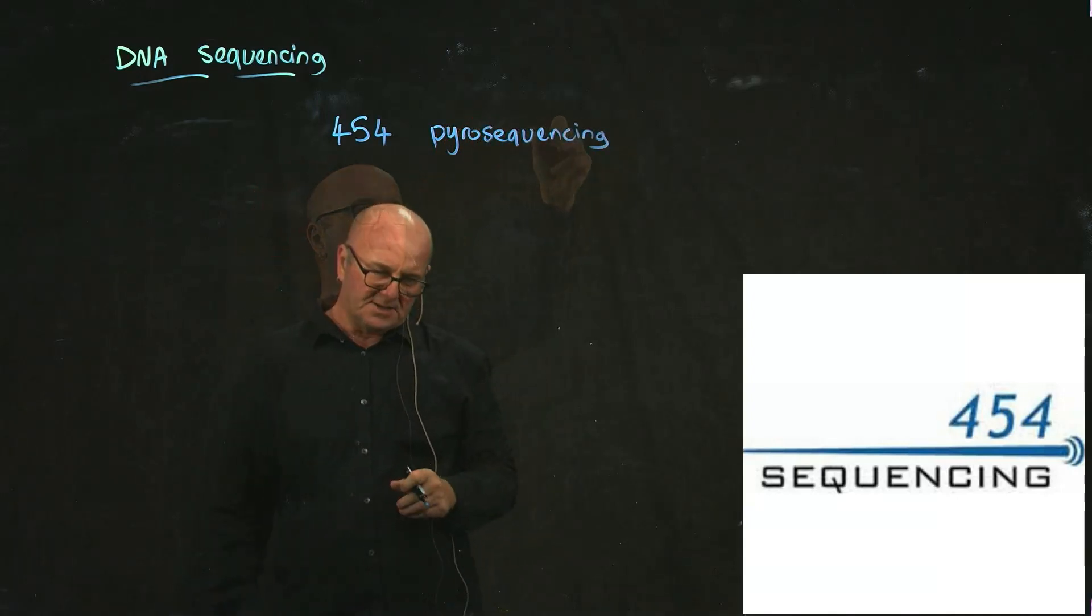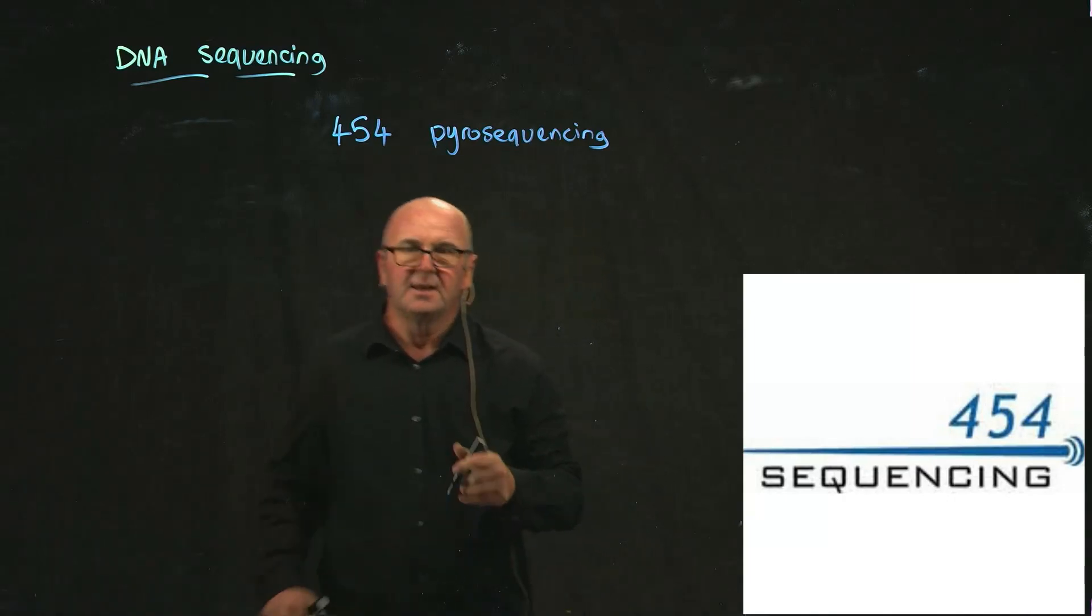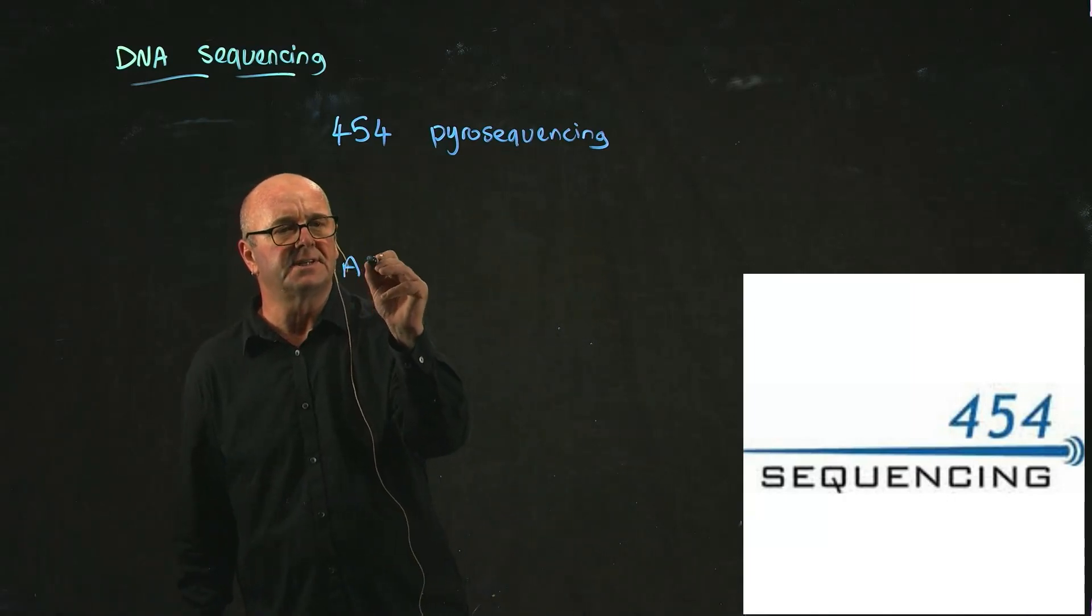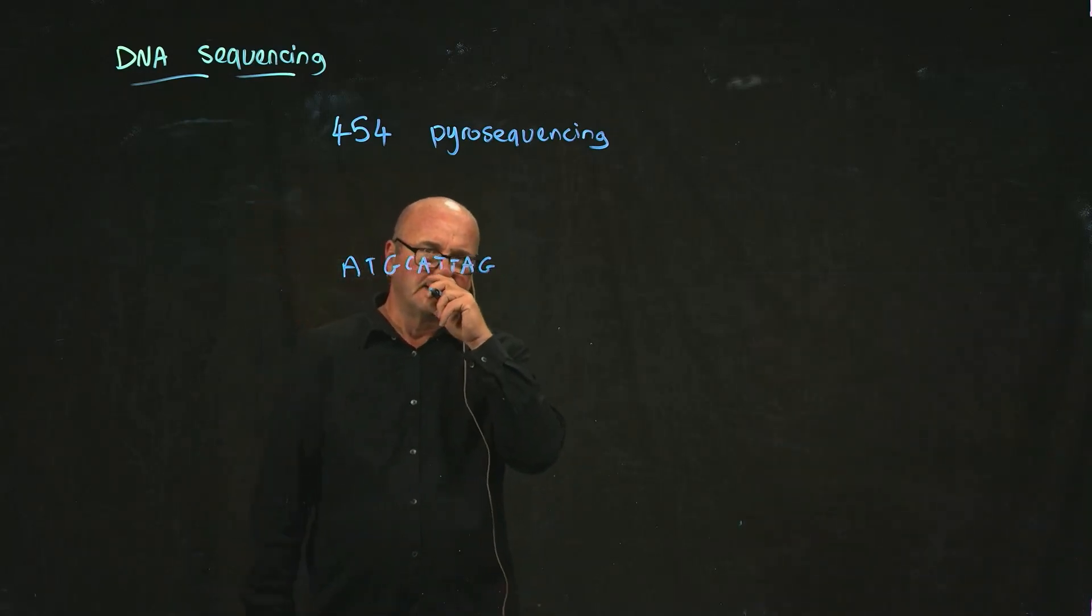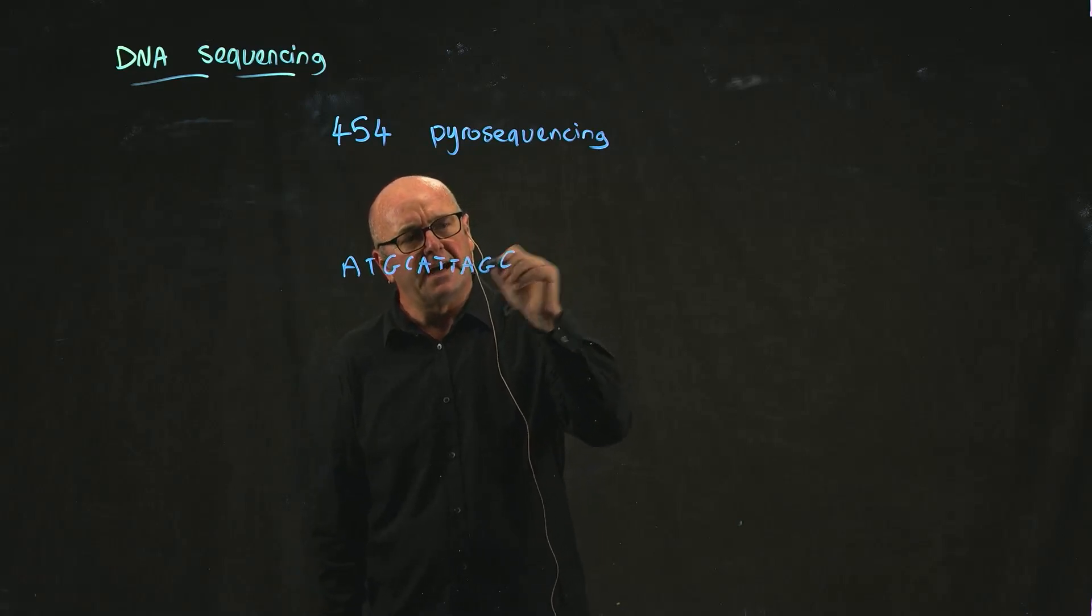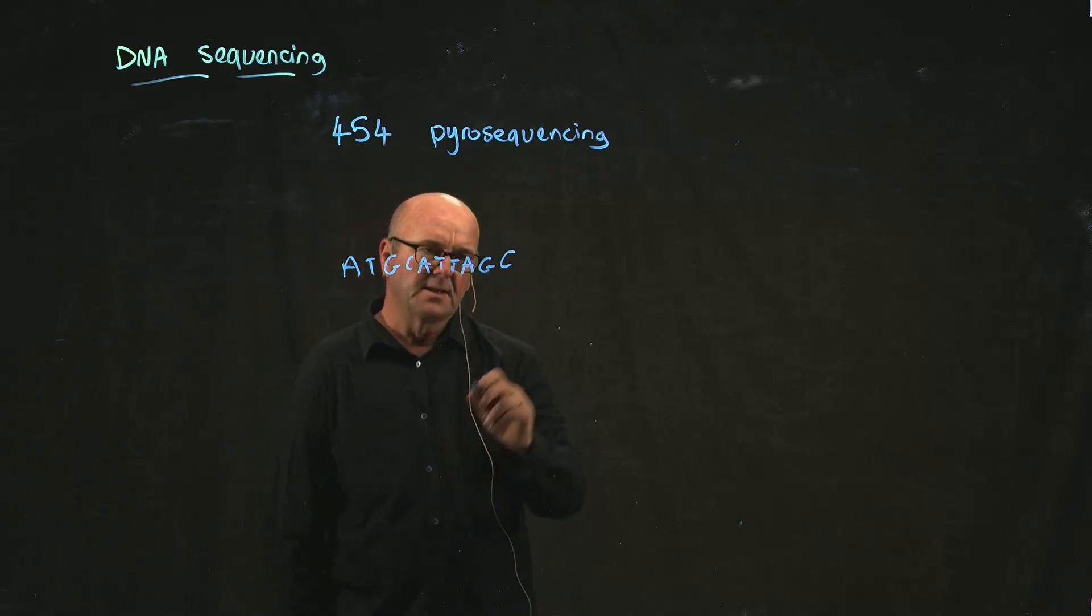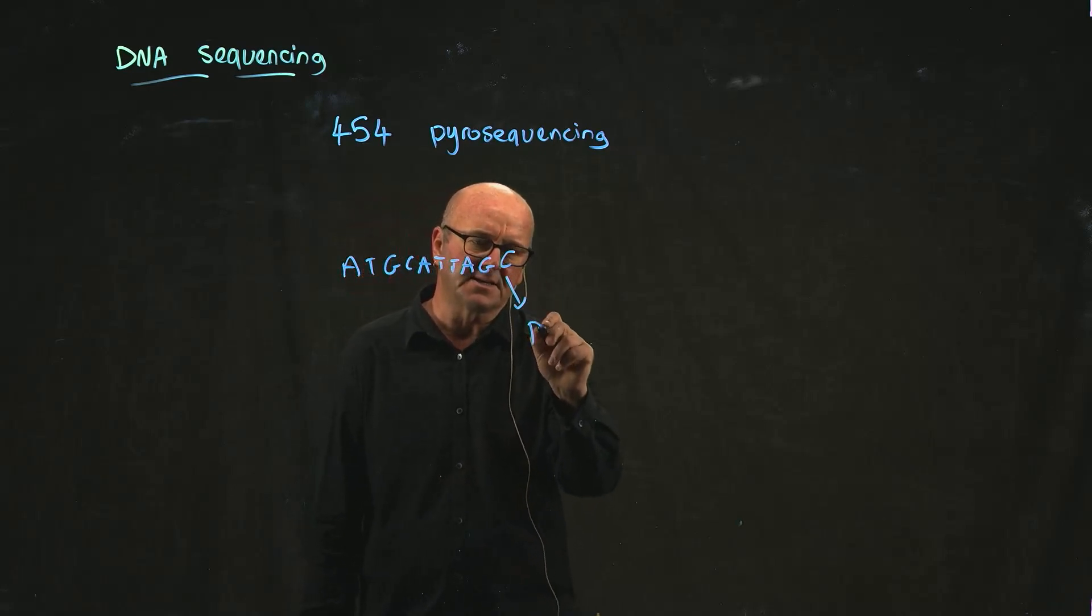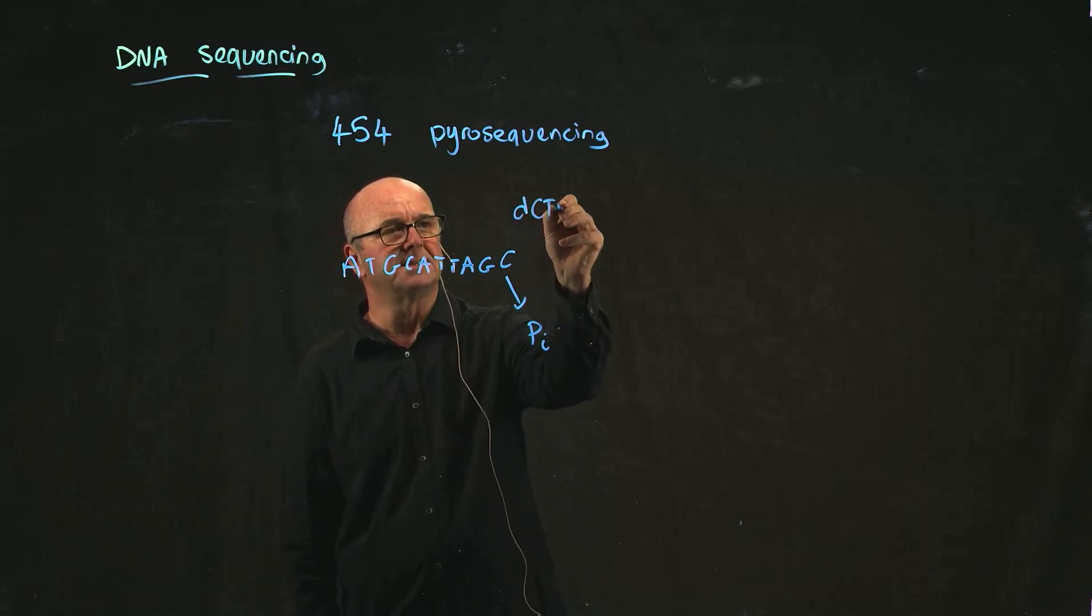The way that this works is you have your DNA molecule, and as you add a new compound, a new base, you release a little bit of inorganic phosphate. That's the P. So if you add dCTP...